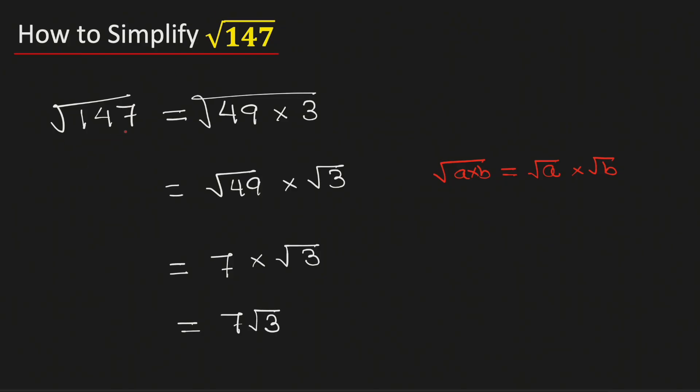Therefore square root of 147 in simplified radical form is equal to 7 root 3, and this is our final answer.